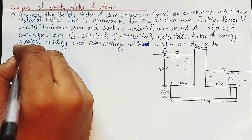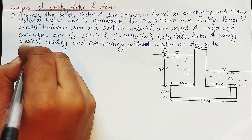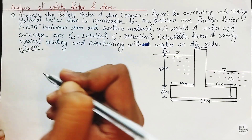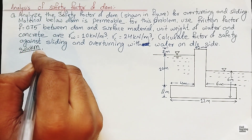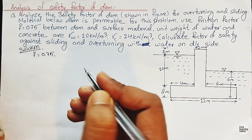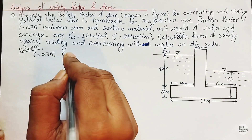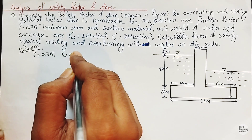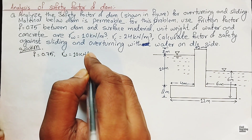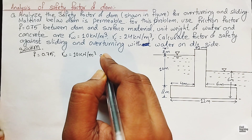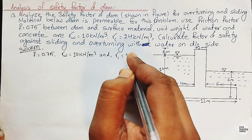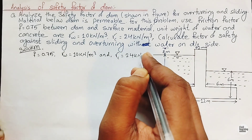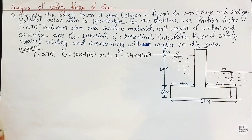Let's proceed with writing the solution. We are provided that the coefficient of friction f equals 0.75, unit weight of water is 10 kilo-Newton per cubic meter, and unit weight of concrete is 24 kilo-Newton per cubic meter.